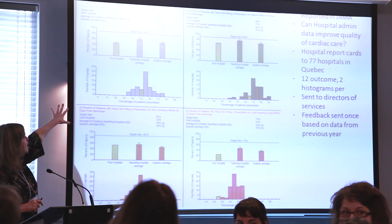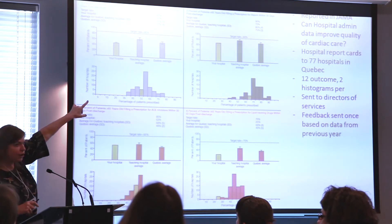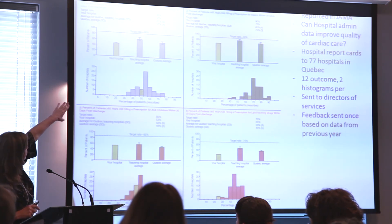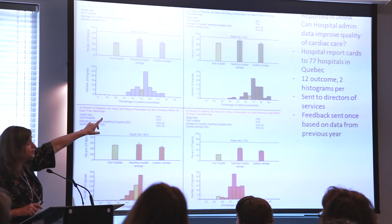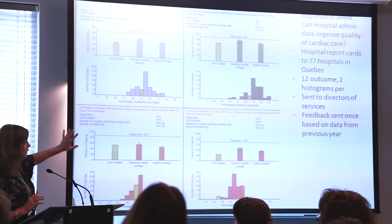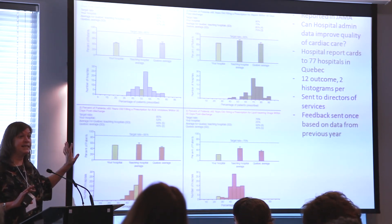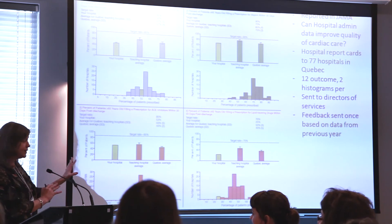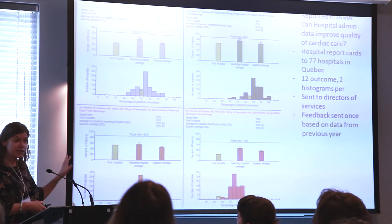They gave you two graphs on one outcome. You can see there's your hospital; there was a target rate of 85%. This shows the percent of my hospital's patients that filled the prescription for beta blockers, compared to the teaching hospital and the whole Quebec average. The histogram below is harder to interpret. The cardiac physicians were not given this information — it was given to the CEO and director of the hospital, under the assumption that some magic was going to occur. This did not work at all. They were given this once, based on data from the previous year.